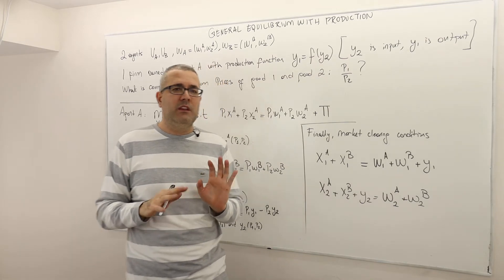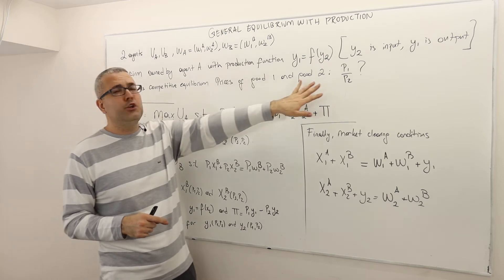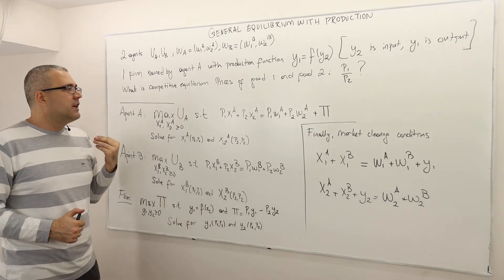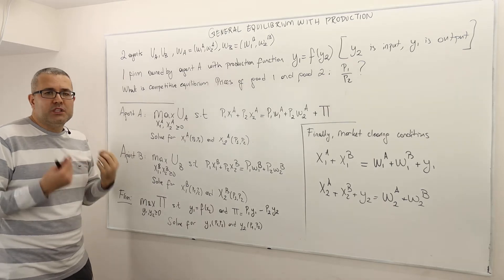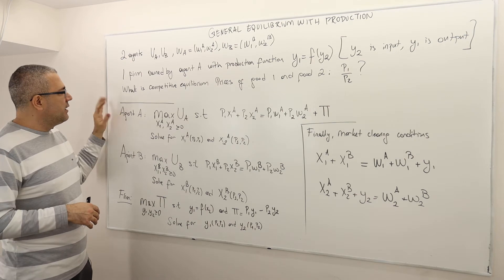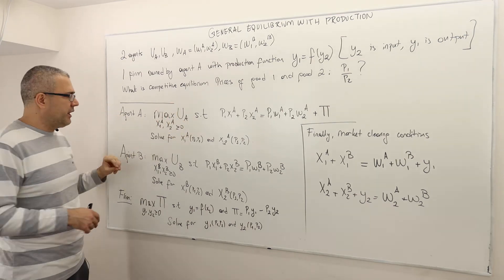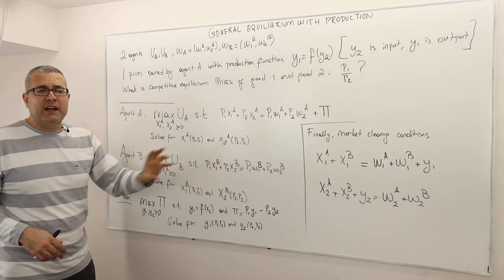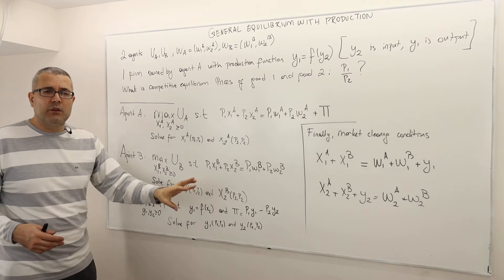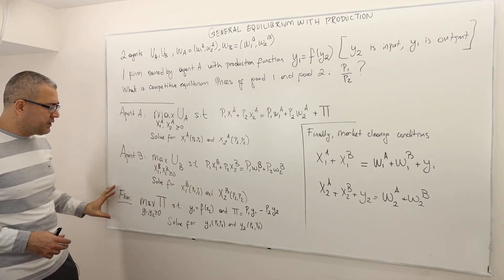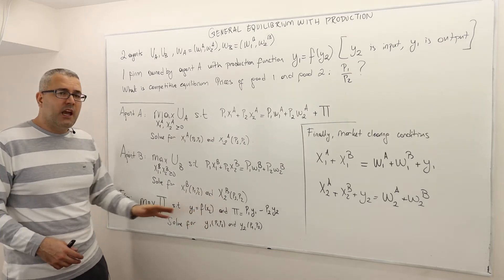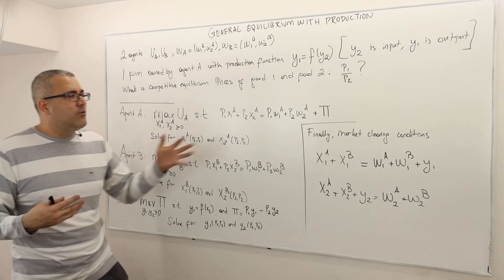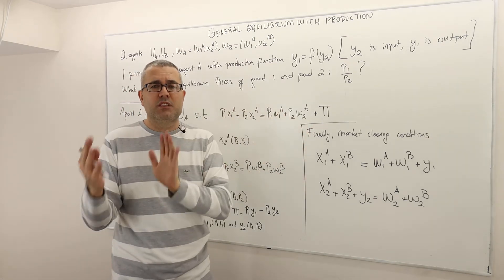So there are going to be only two prices: price of good one and price of good two. The question is: what is the perfectly competitive equilibrium price ratio? The solution involves agent A utility-maximizing subject to his budget constraint to derive his demand curves, agent B doing the same, and the firm maximizing profit subject to its technology to derive its demand for good two (the input) and its supply of good one. Then we apply market clearing conditions where demand equals supply for each good.